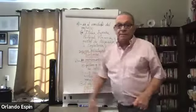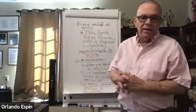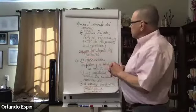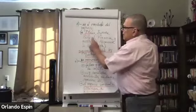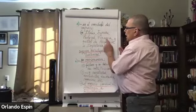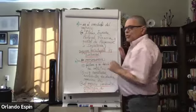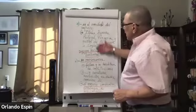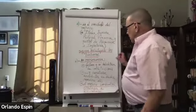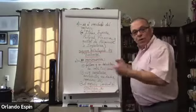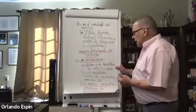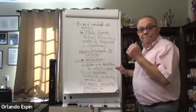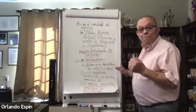En el occidente del imperio, que sería Europa Occidental y el norte occidental de África. En el occidente del imperio, estamos hablando en Europa específicamente, Italia, España, Portugal, Francia, y pedazos grandes de Alemania e Inglaterra. En el occidente europeo, como consecuencia de todas las invasiones, empiezan a debilitarse las instituciones. Empiezan a debilitarse y empiezan a derrumbarse.